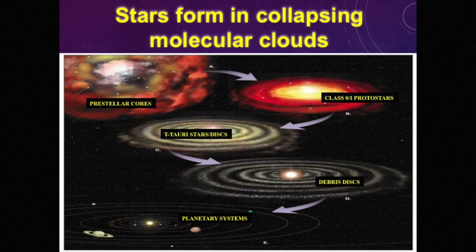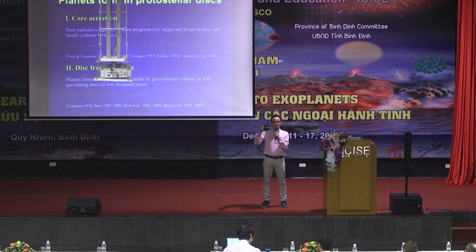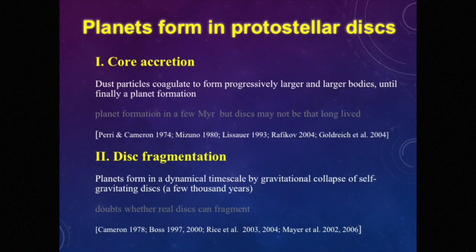In terms of planet formation, I believe it can happen two ways. The first approach is the bottom-up approach: you have dust particles that coagulate and produce progressively larger and larger bodies until you reach a planet — a process that may take a bit too long, a few million years. The second way to form planets, at least giant planets, is the so-called disk fragmentation, a top-down approach, where the disk is gravitationally unstable and fragments — breaks into pieces — forming planets.